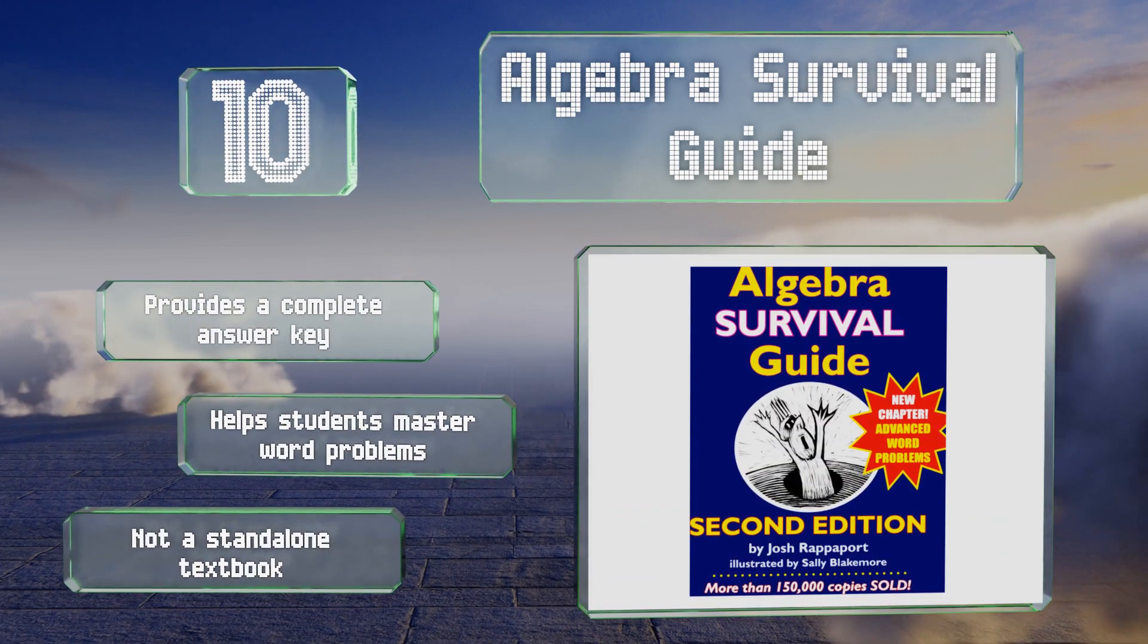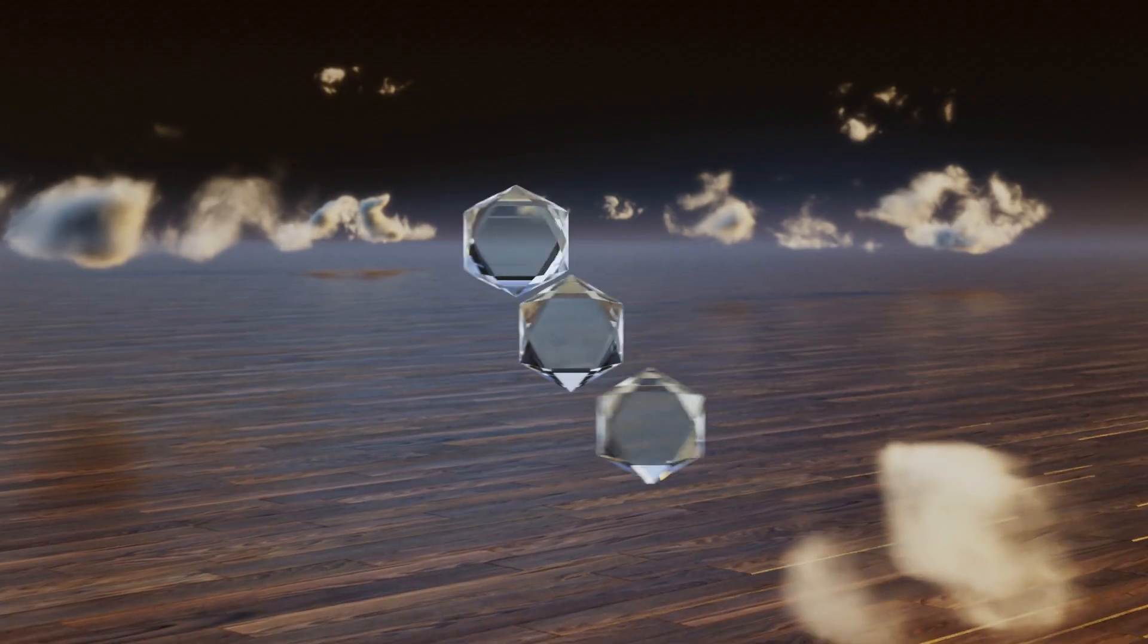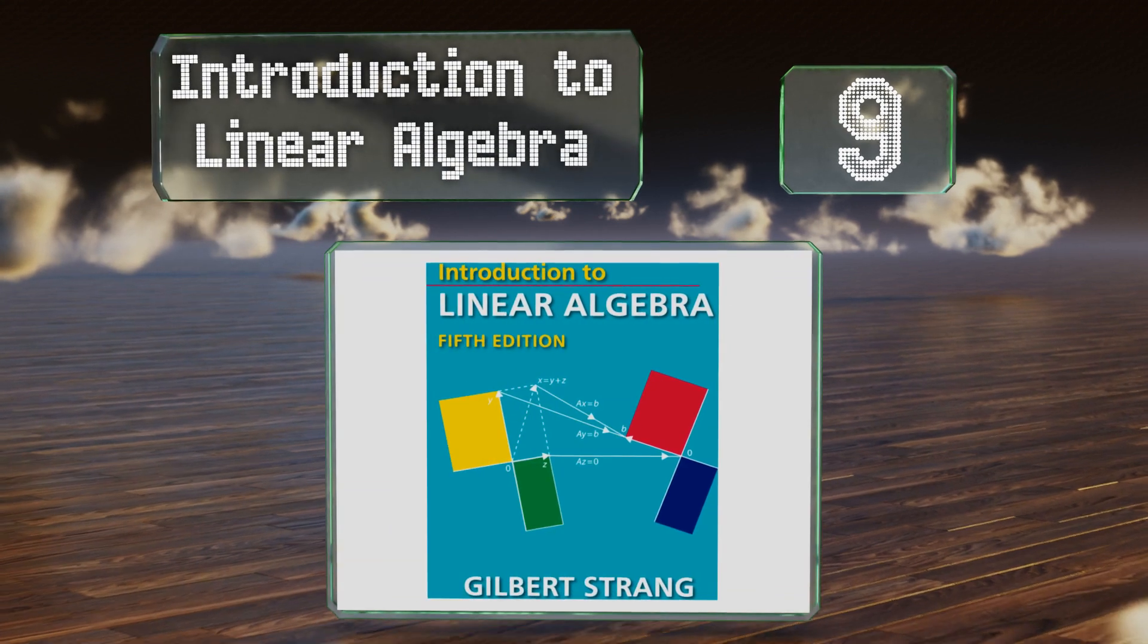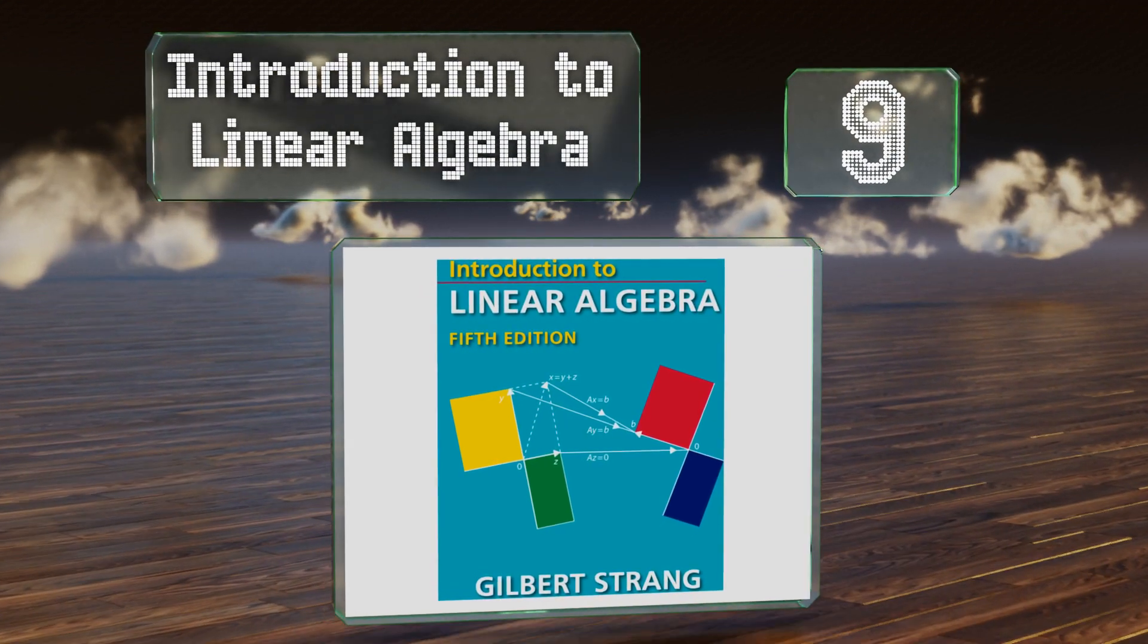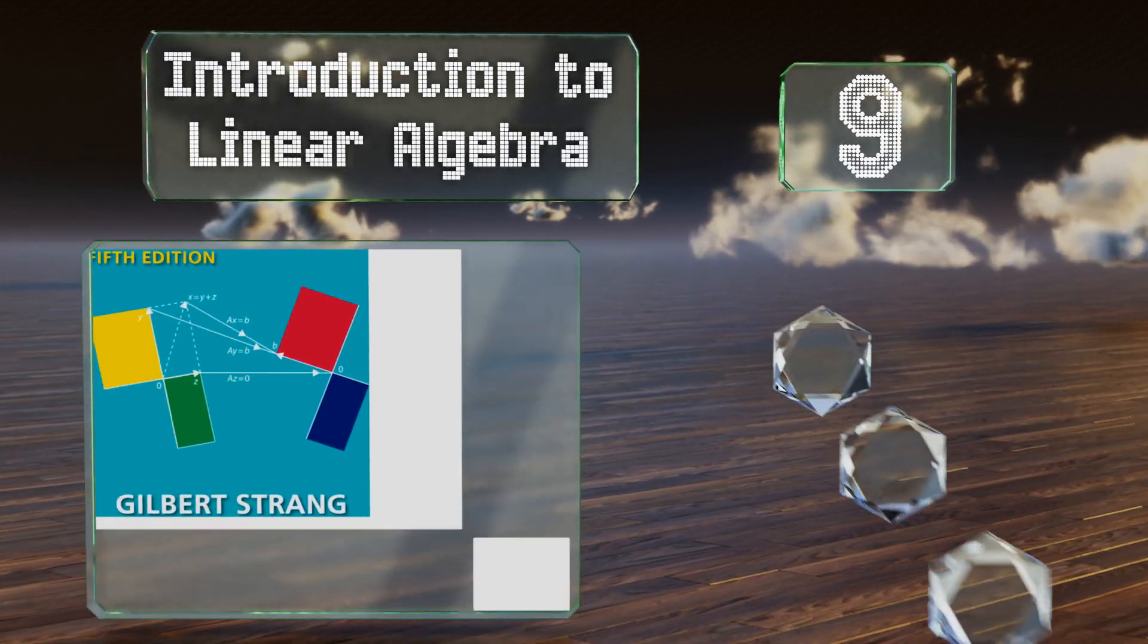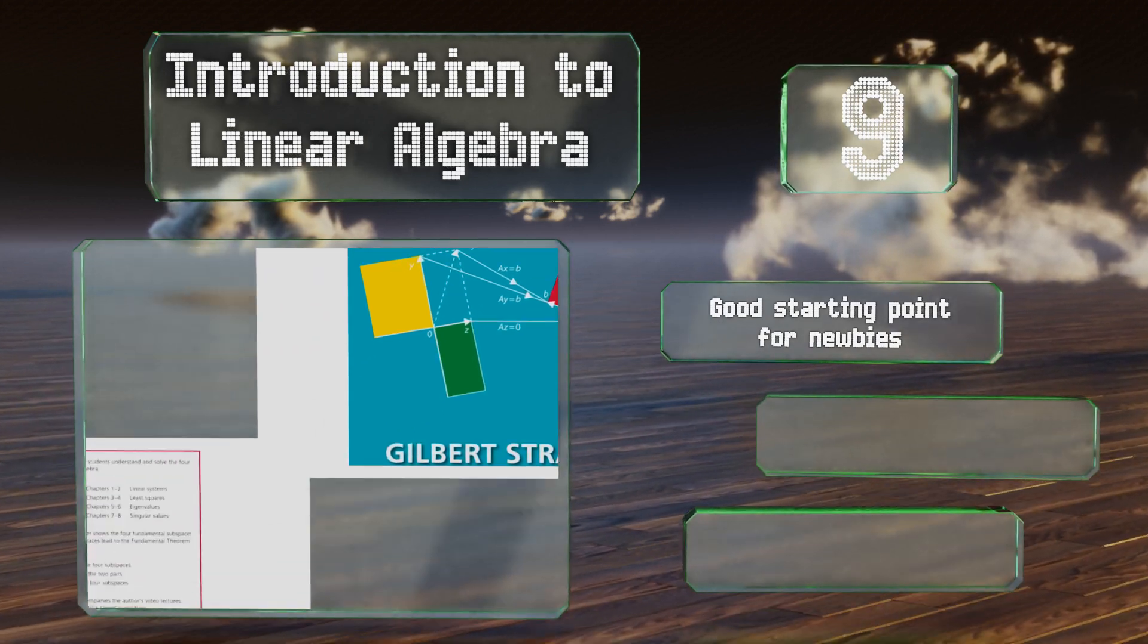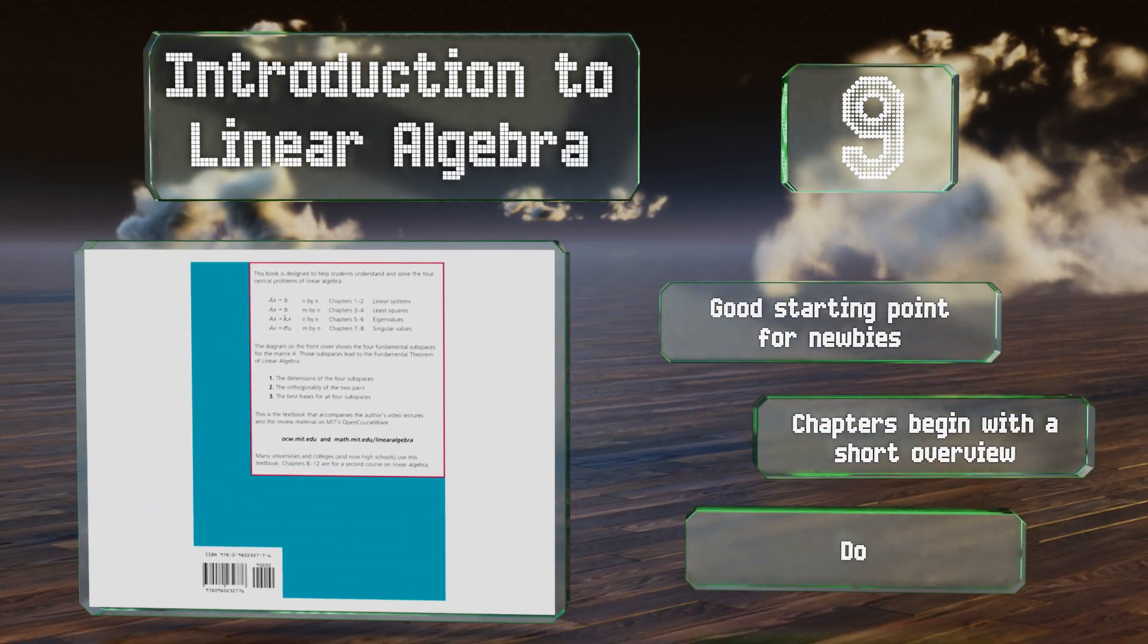At number nine, Introduction to Linear Algebra is a basic option with easy-to-understand correlative challenge and review questions. It's often praised among teachers in high schools and colleges because of the way it breaks down difficult concepts in a simple manner. This is a good starting point for newbies and the chapters begin with a short overview, but it doesn't have enough worked examples.